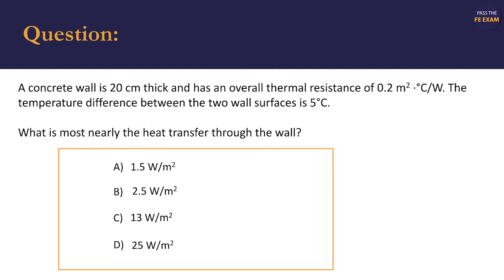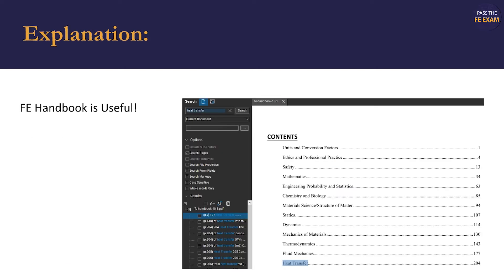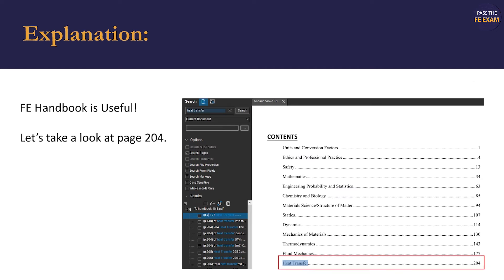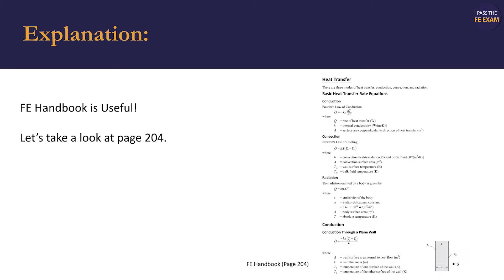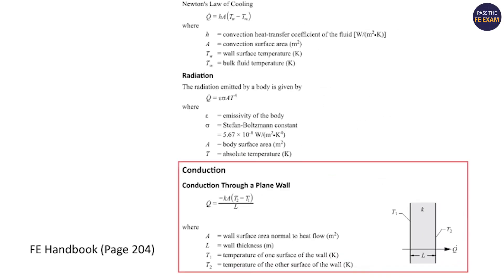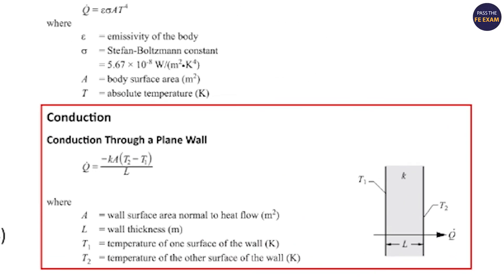We're then asked, what is most nearly the heat transfer through the wall? We're given four choices, all in units of watts per square meter. The FE handbook is useful in this problem, but we have to know what to look for. If we search for heat transfer, we'll find the basic heat transfer equations on page 204. At the bottom of the page, we'll find the equation for conduction of heat through a plane wall with the associated variable definitions.